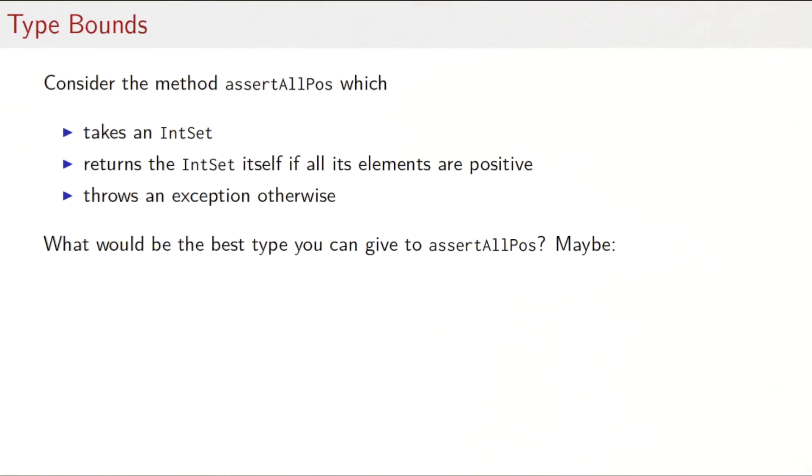So let's look at type bounds first. As a motivating example, consider you want to write a method assertAllPos or assertAllPositive. That method should take an IntSet and return the IntSet itself, but it should check whether all elements of the IntSet are positive. If they are not, then it should throw an exception. What would be the best type you can give to assertAllPos? You might come up with this type here: it would take an IntSet and return an IntSet. In most situations this is fine, but maybe one can be more precise.